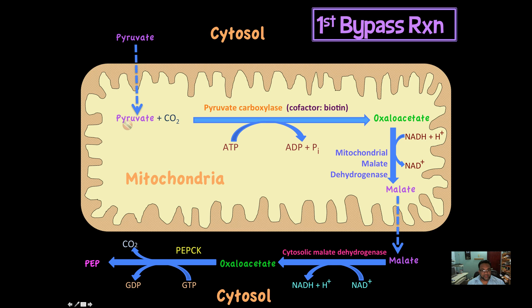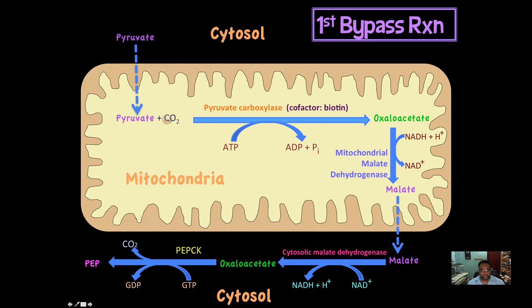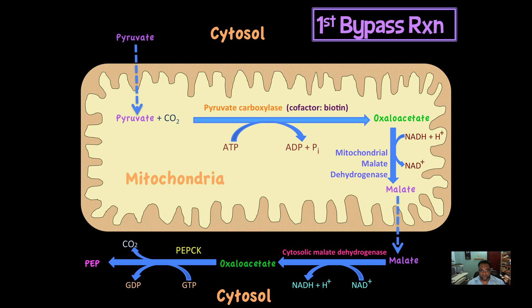Let's recap everything. Pyruvate is carboxylated to oxaloacetate by pyruvate carboxylase — an ABC enzyme, meaning it uses ATP, its cofactor biotin, and CO2. It's a carboxylation reaction. Once oxaloacetate is formed in the mitochondrial matrix, it cannot leave the mitochondria because the mitochondrial membrane is impermeable to oxaloacetate. So the mitochondria converts oxaloacetate to malate using mitochondrial malate dehydrogenase, and NADH is converted to NAD+.